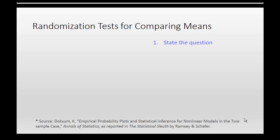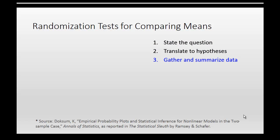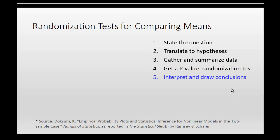Let me remind you of the five steps for significance testing. We're going to state a question and translate it to hypotheses. We'll gather and summarize data, which in this case will be quantitative. Then we'll get a p-value from the randomization test — that's where I'll show you how to use StatKey. And finally, we'll interpret the p-value and draw some conclusions, and in particular, state a response to the question in plain language.